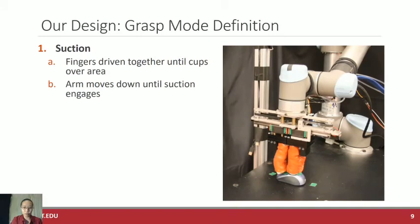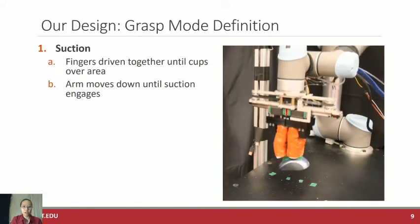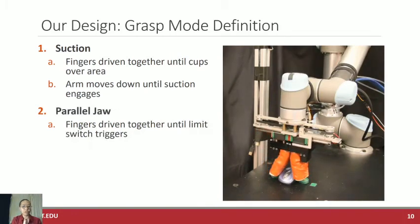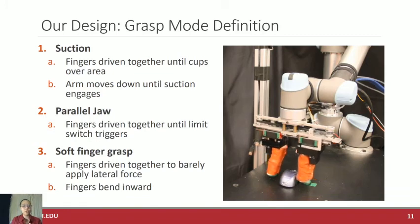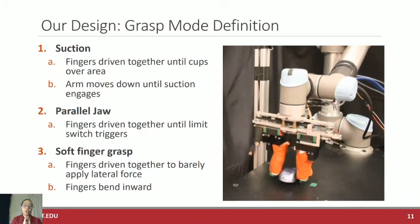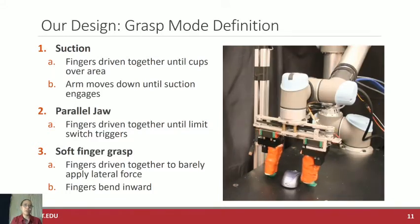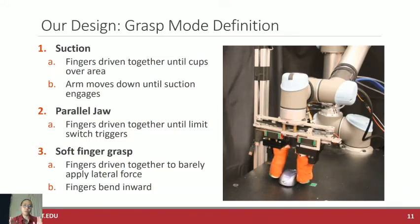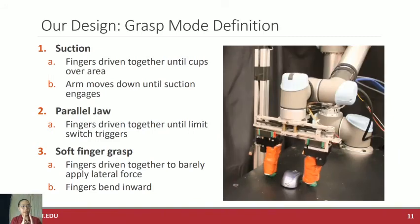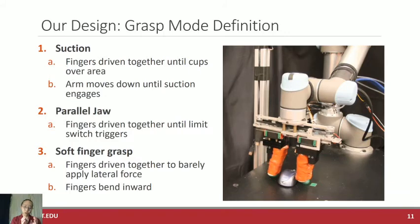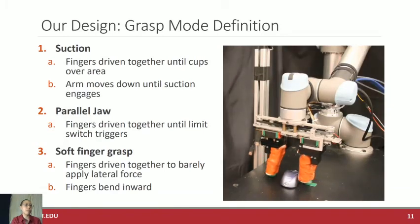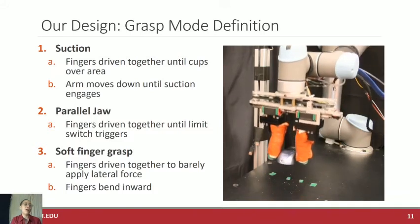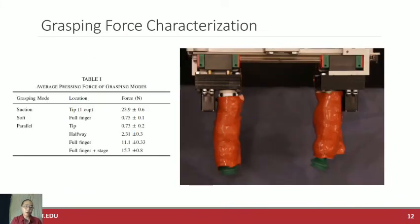To investigate these different motifs, we have suction where we bring the fingers close together in order to have the suction cups over the graspable area. We have parallel jaw, which again, we drive the fingers until they close and we detect this by the limit switch triggering. And then finally, we have the soft finger grasp. In order to distinguish it from the parallel jaw, we drive the fingers until they are just barely applying lateral force to the object. Although we do this manually in the paper, you can imagine having a force sensor at the end rather than a limit switch to detect when you're starting to have force clamping them together. Once it detects that we have just about touching the object, we bend the fingers inward. We're only relying on the pinching motion of the soft fingers to do this grasp. We do this in order to distinguish the different modes between parallel jaw and soft finger grasping so we can better identify which grasping mode is responsible for what.